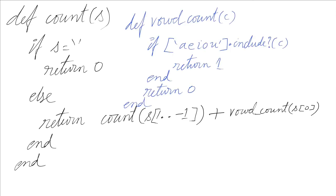So the vowel method looks like this. If the character is one of these values in this array, A-E-I-O-U, then we return one. Otherwise, we return zero.